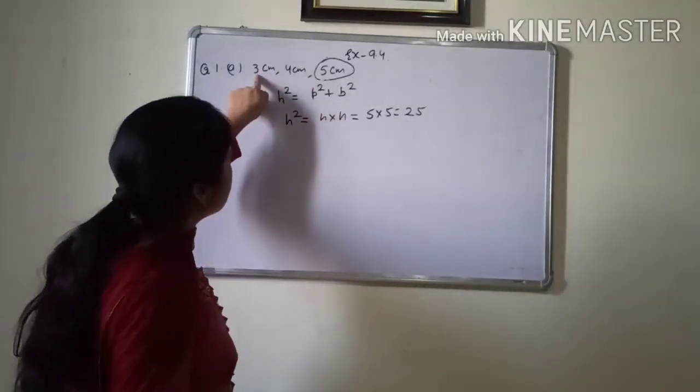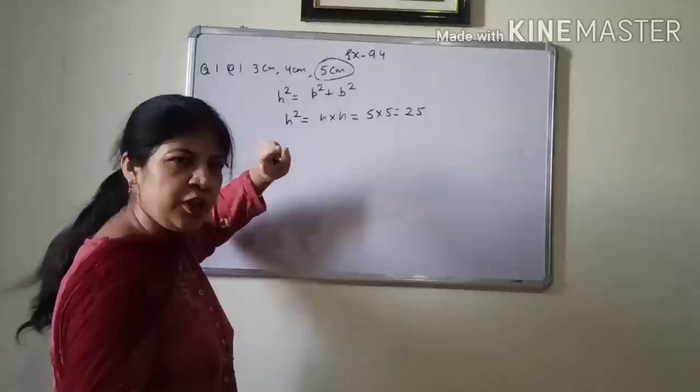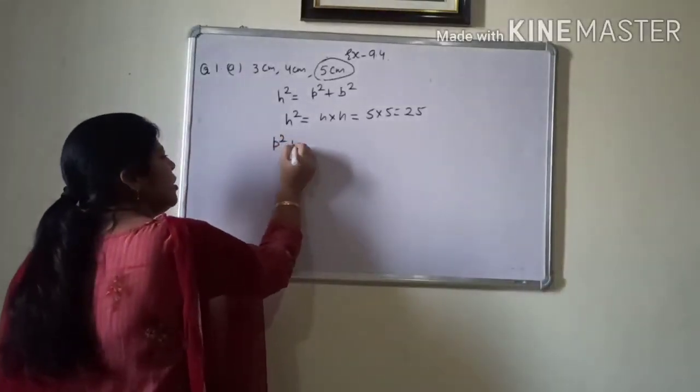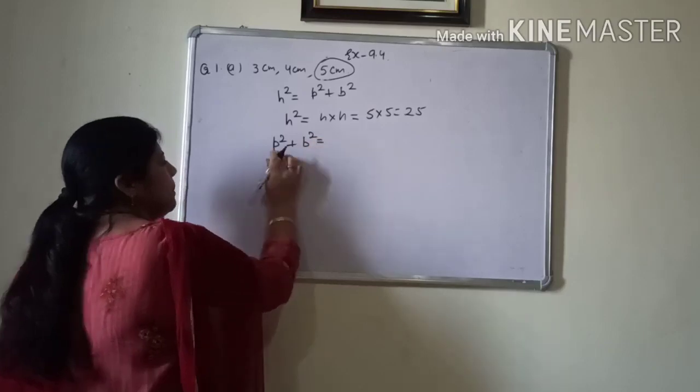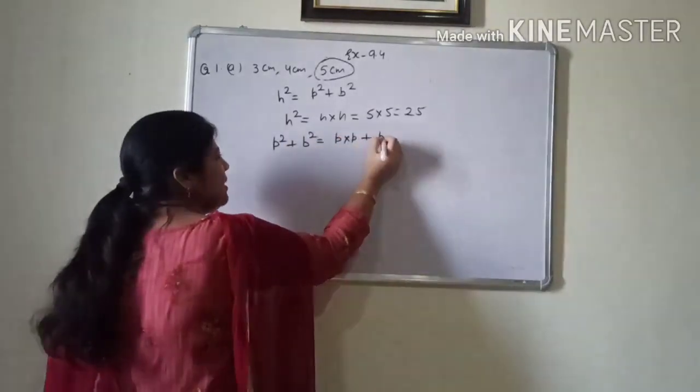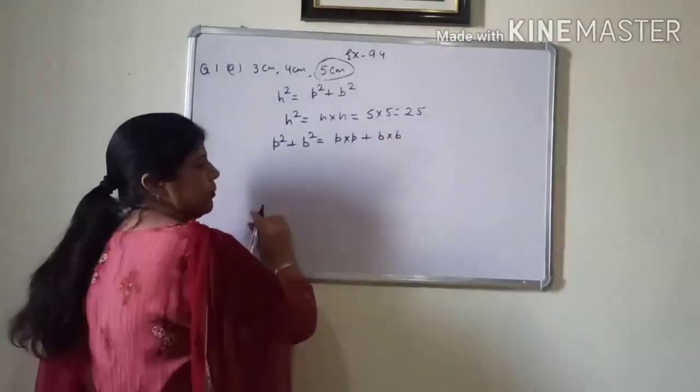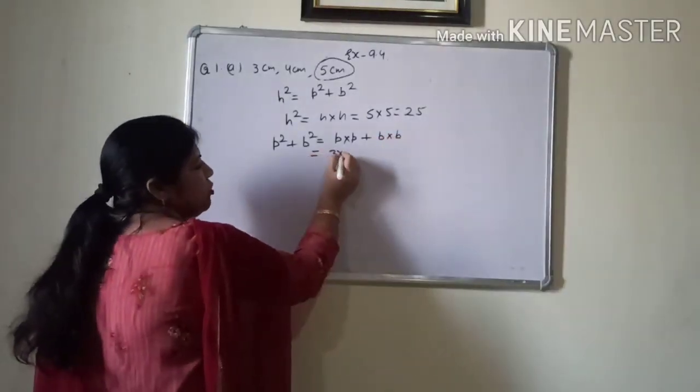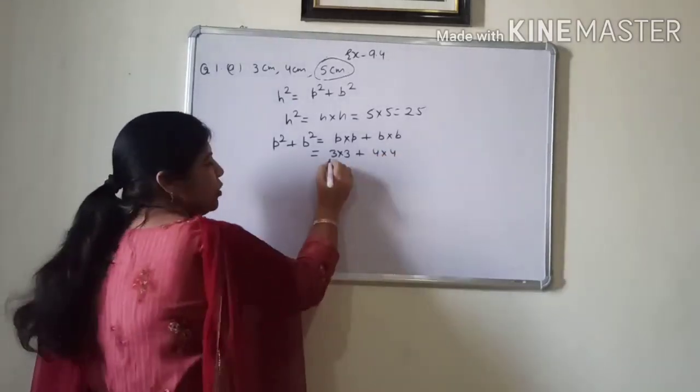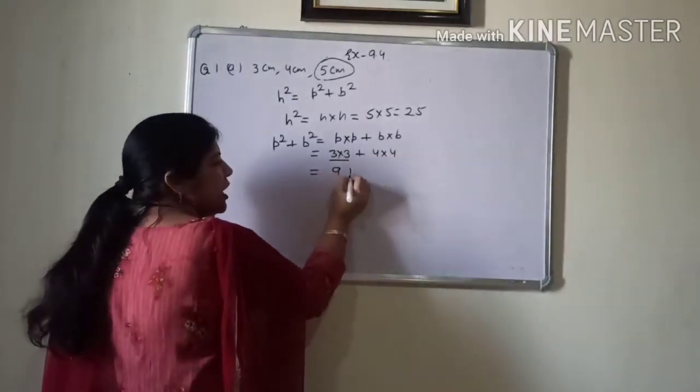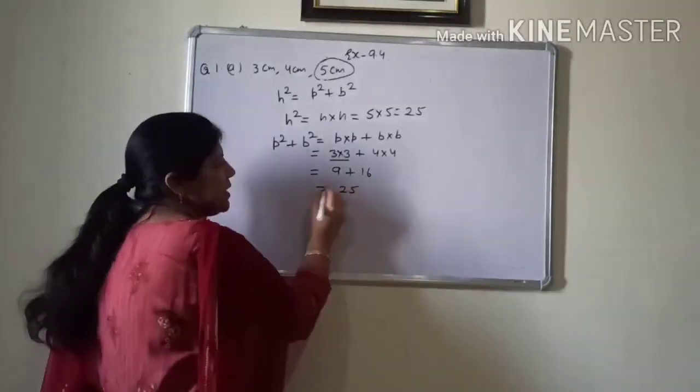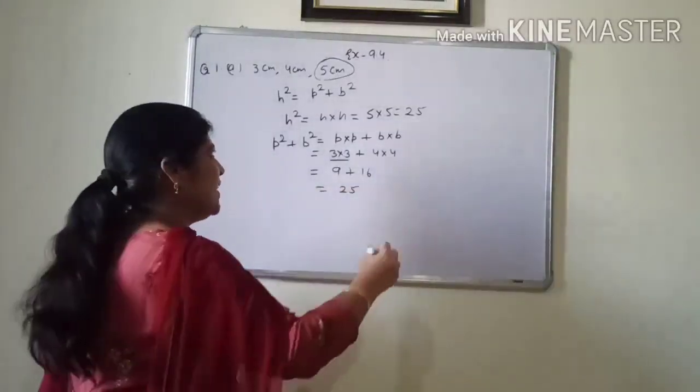And now, you can take p as 3 or b as 3. That is your case. So, p square plus b square. p square means p into p, b square means b into b. p is 3 into 3 plus 4 into 4. 3 into 3, 9. 4 into 4, 16. 16 plus 9, 25.